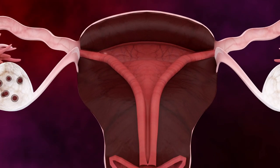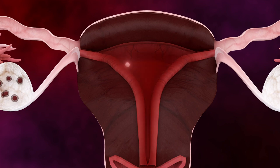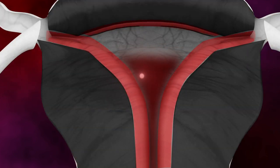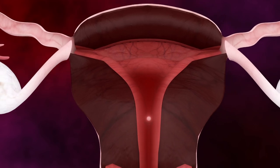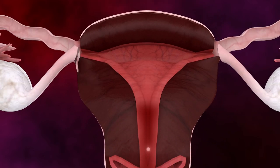If the egg isn't fertilized, estrogen levels drop, causing the uterine lining to break down. The unfertilized egg and the lining leave the body through the vagina, resulting in menstruation, the monthly period.